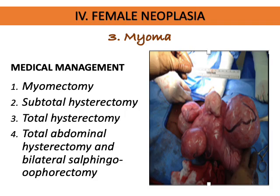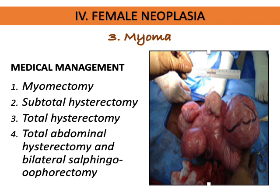When a woman has myoma without symptoms, immediate removal is not required. Medical management includes myomectomy — removal of the myoma — but since it proliferates from the myometrium, it may recur. In that case, hysterectomy may be recommended, but only for women who already have children or are older. Options include subtotal hysterectomy (a portion of the uterus), total hysterectomy (entire uterus), or TAHBSO — total abdominal hysterectomy and bilateral salpingo-oophorectomy.